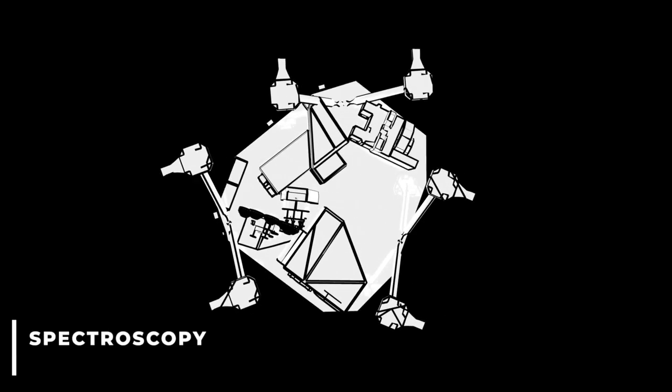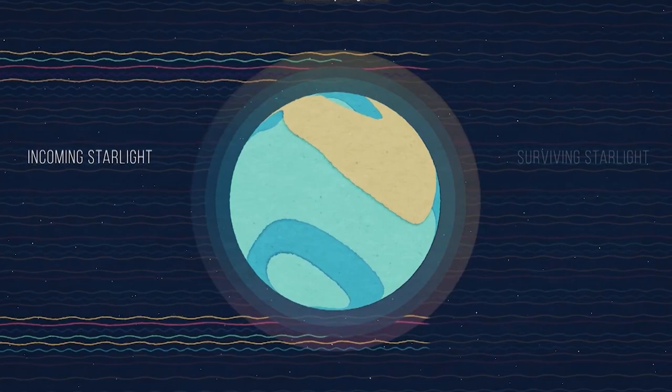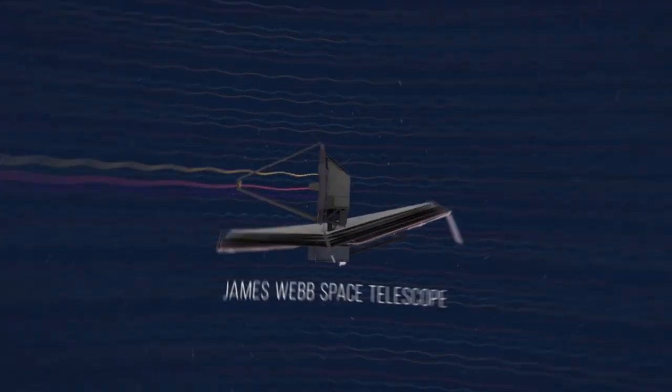Let's quickly look at what spectroscopy is. To detect molecules like water, methane, and carbon dioxide on distant planets, astronomers point the telescope at known exoplanets in our Milky Way galaxy.